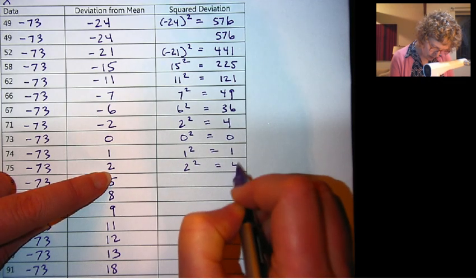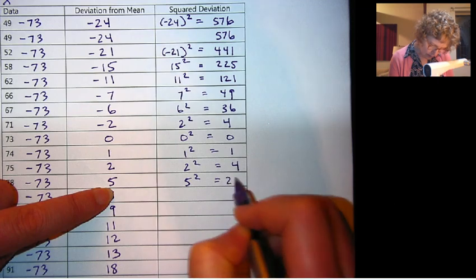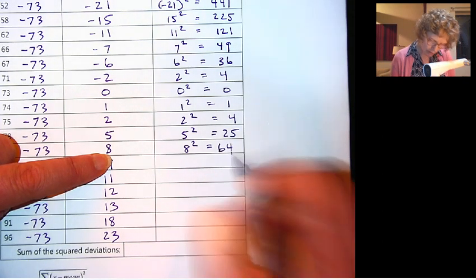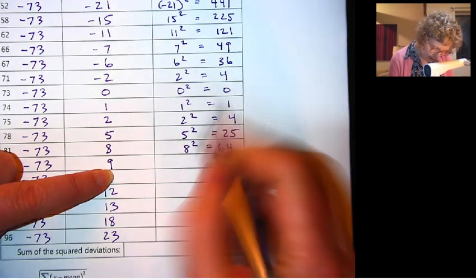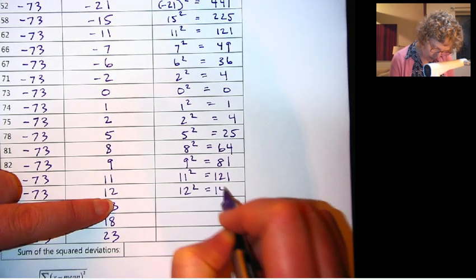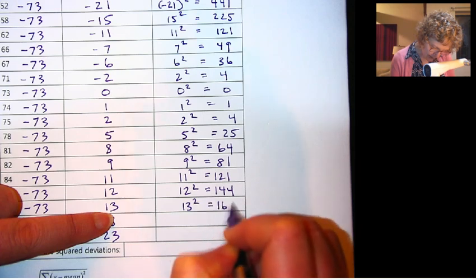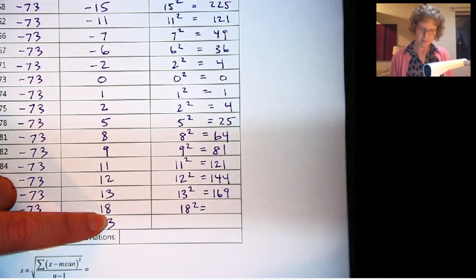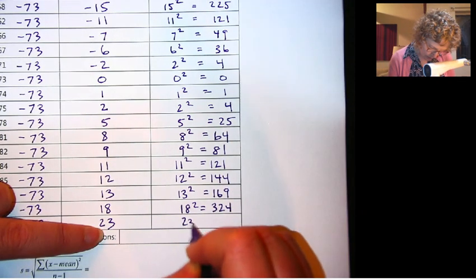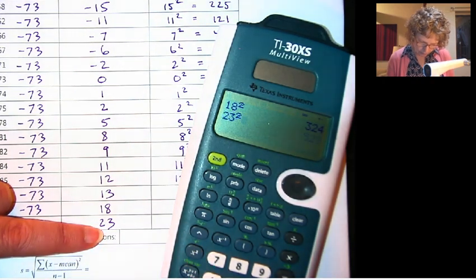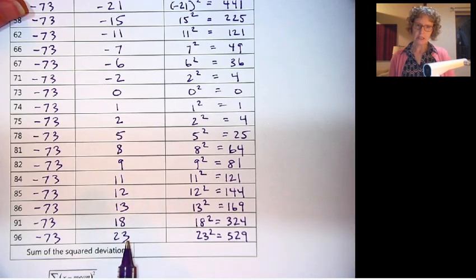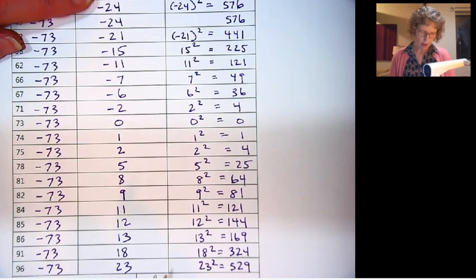1 squared is 1, 2 squared is 4, 5 squared is 25, 8 squared is 64, 9 squared is 81, 11 squared is 121, 12 squared is 144, 13 squared is 169, 18 squared is 324, and 23 squared is 529. Those are some big numbers because we have a lot of deviation. We've got 23 away from the mean on this side and 24 away from the mean on this side.